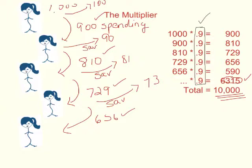Now, if the marginal propensity to consume, instead of 90%, was let's say 80%, then this number would be smaller.